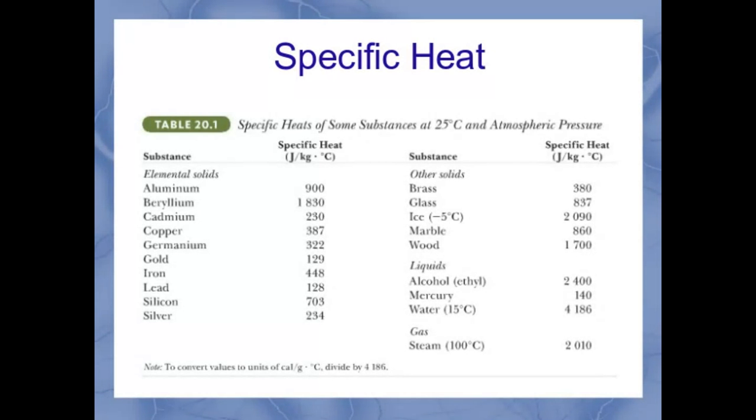Here's an example of a table you might see for specific heat. On this listing, it's going to give you the types of materials. A lot of times you're seeing metals: aluminum, beryllium, cadmium, copper, et cetera. And you'll have the specific heat value for each one of those.